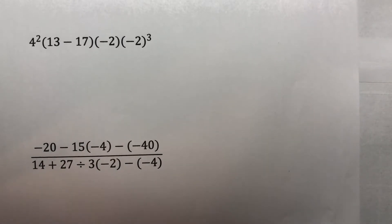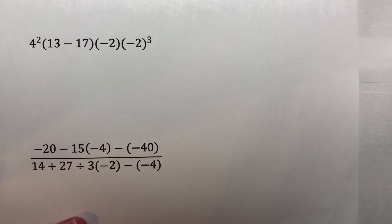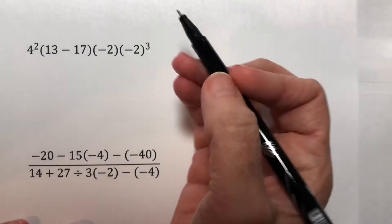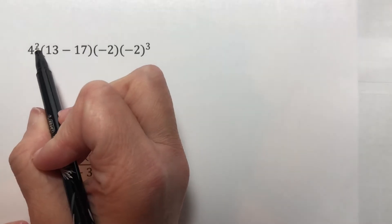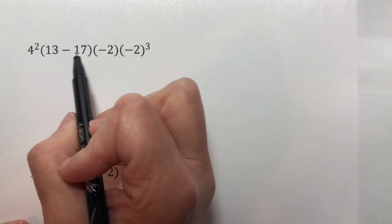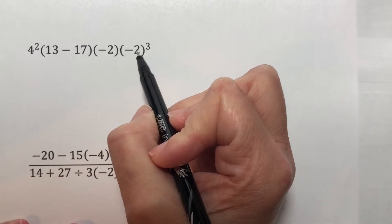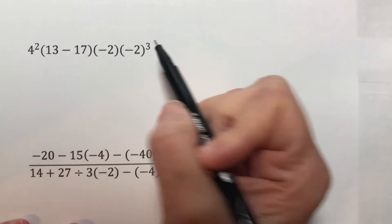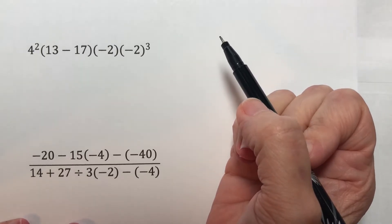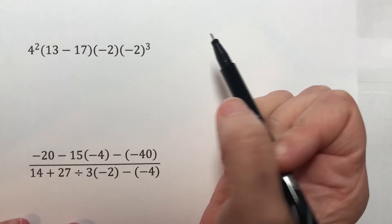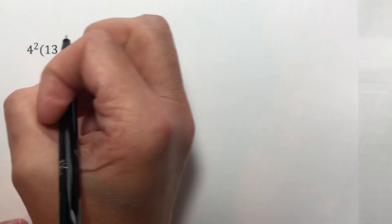Signed number review, this is part 9, working on order of operations. So if I want to do 4 squared times (13 minus 17) times negative 2 times negative 2 cubed, I need to look first inside my parentheses to see if I can simplify anywhere. I can't simplify this or this.